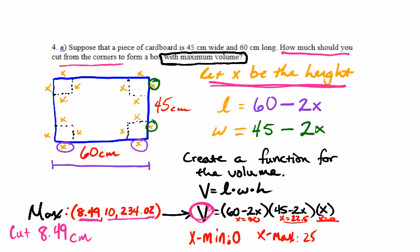That is how you do part 4a in the study guide. Part 4b says to find the length and the width, so I would take x equals 8.49 and plug it in for x in the expression (60 minus 2x) and in the expression (45 minus 2x). I hope that helps, and have a great day.